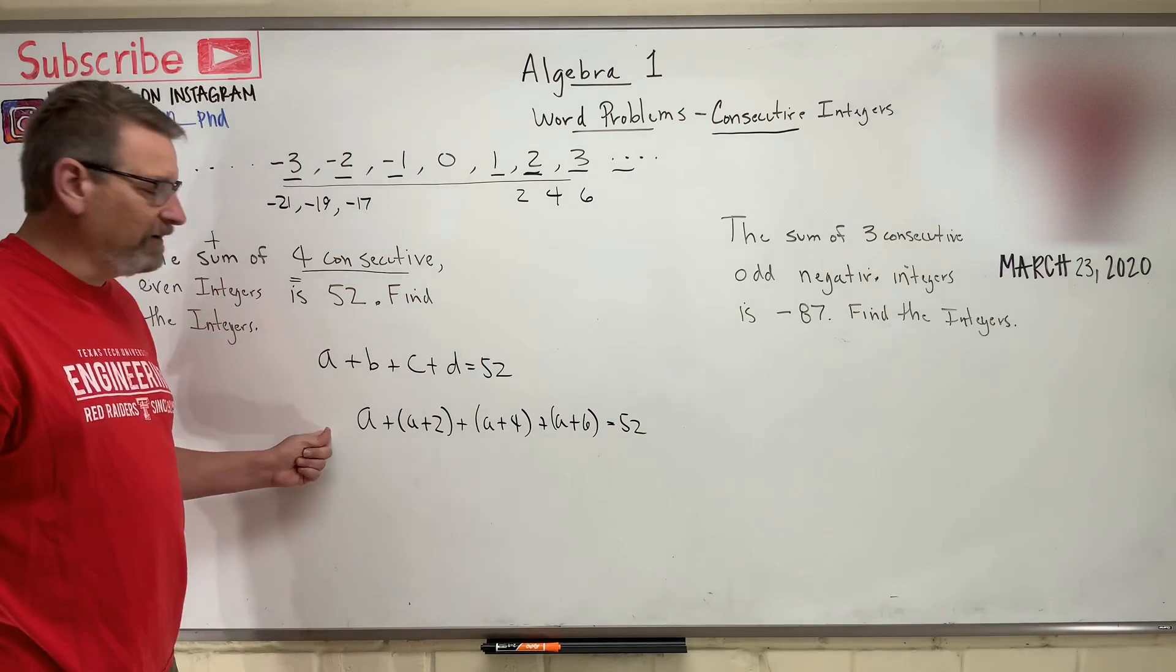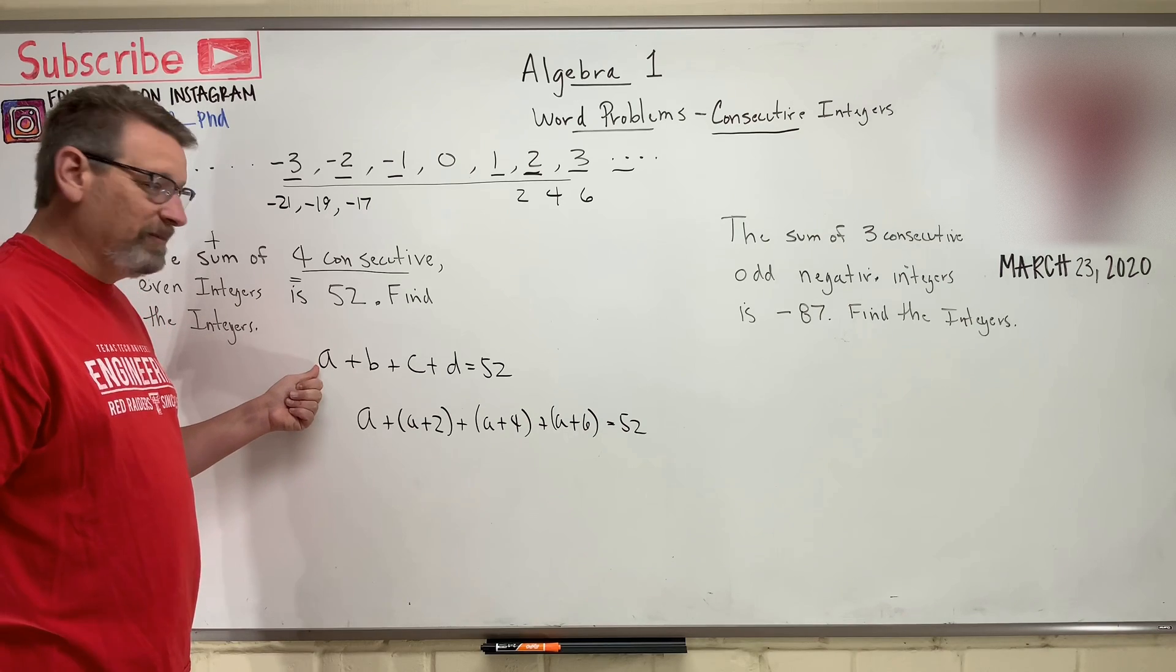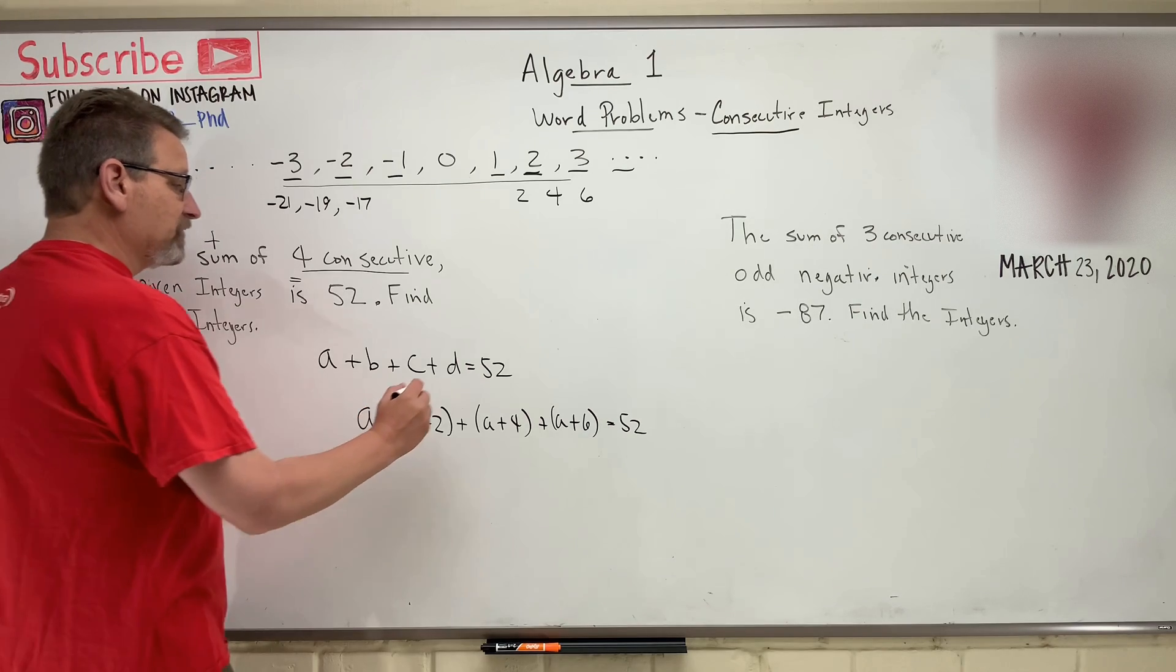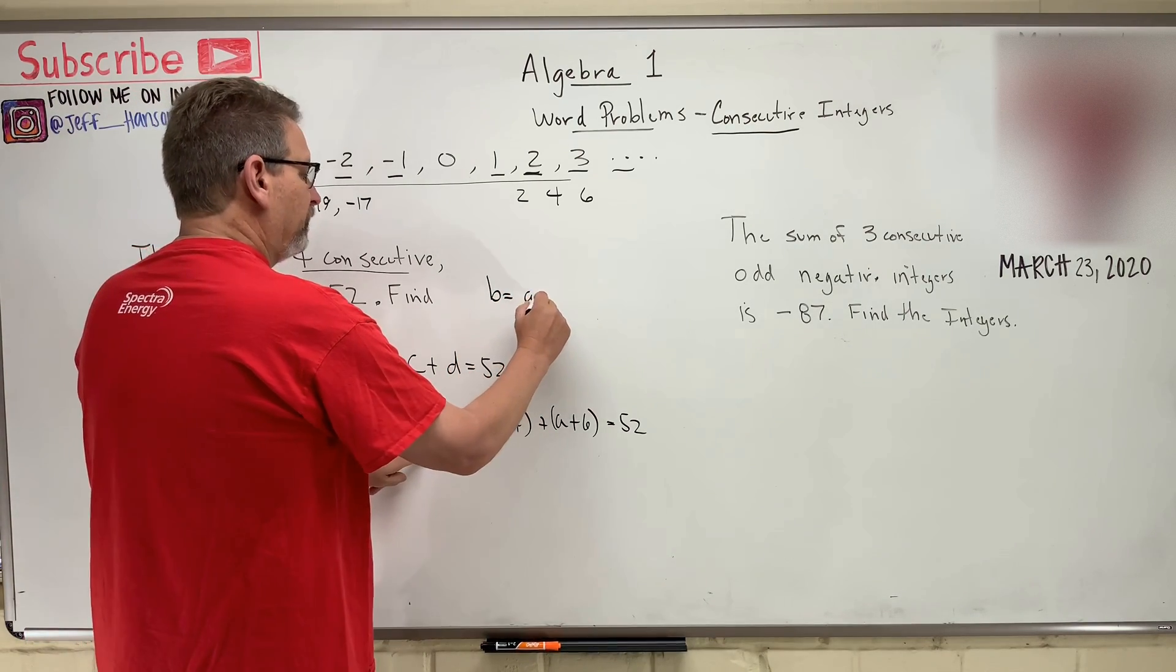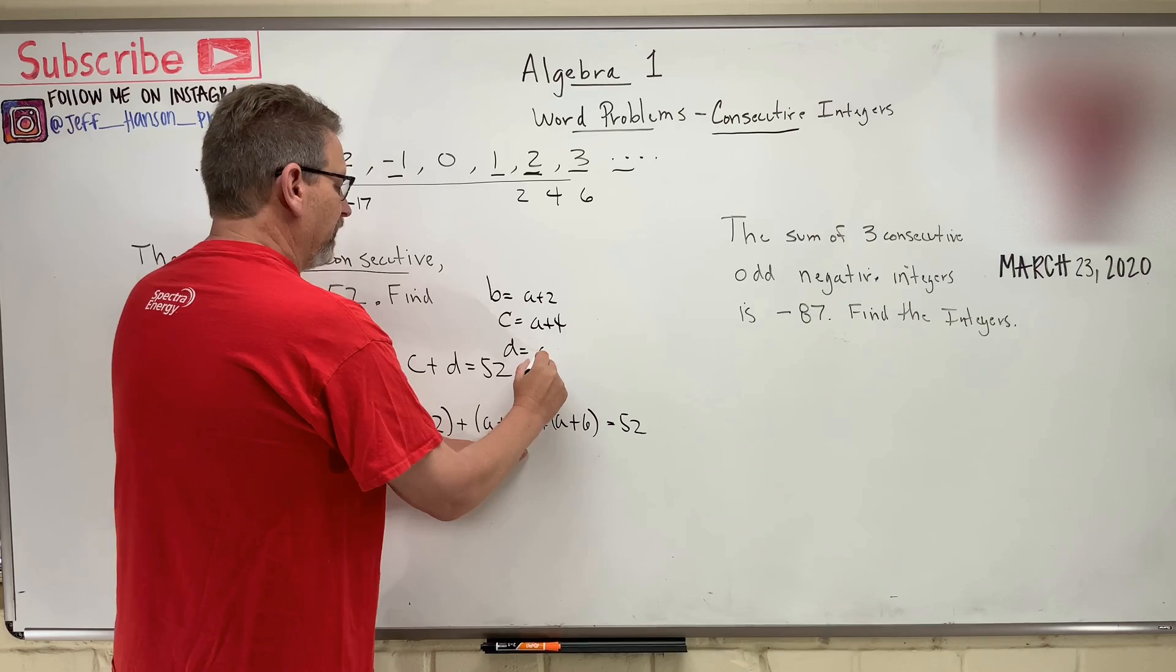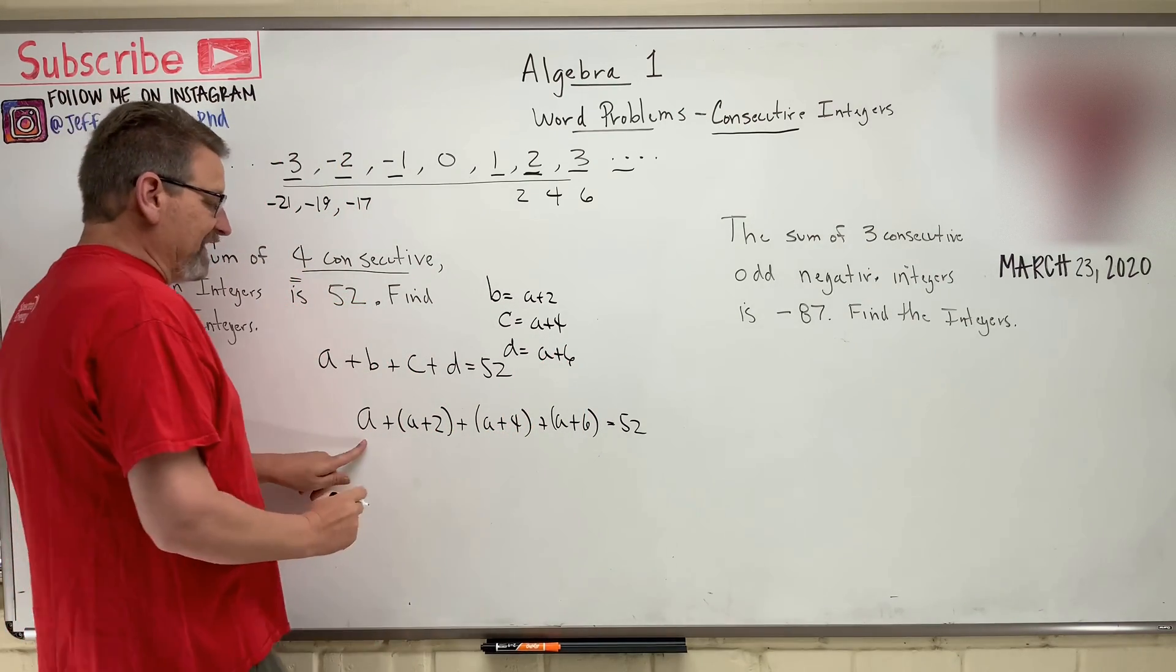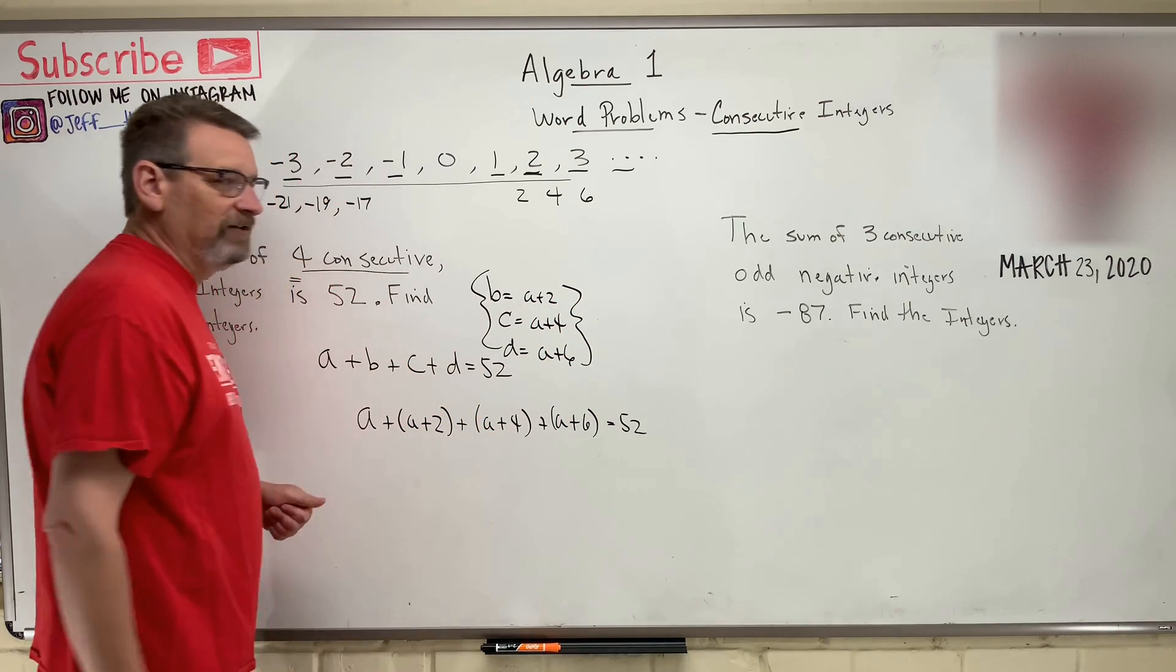And that has to equal 52. You see what we did there? And when we solve for A, what is A? A is going to be the littlest one. So then what is B, C, and D? Well, we can do this, right? B is equal to A plus two. C is equal to A plus four. D is equal to A plus six, right? So we can go back. Once we get A, we can go back and we can get the rest of these guys easy as pi, right?